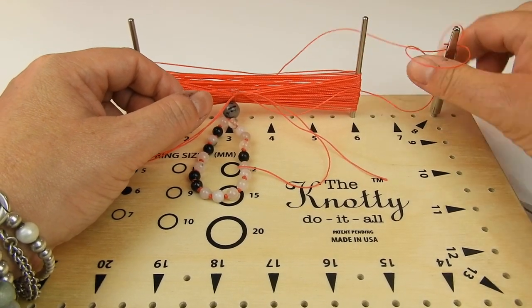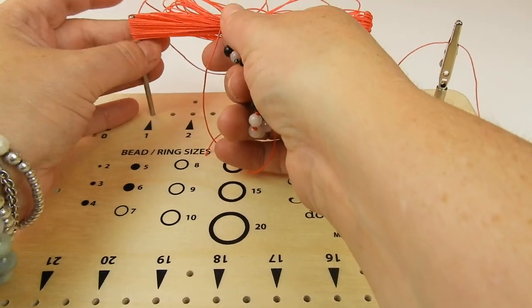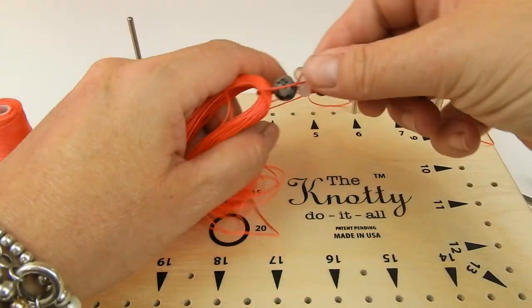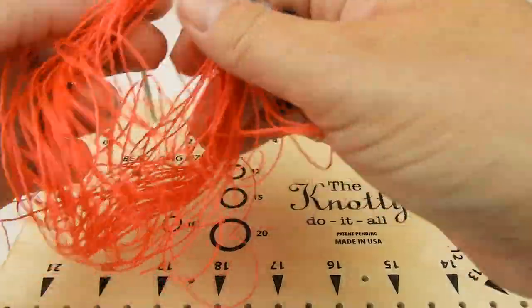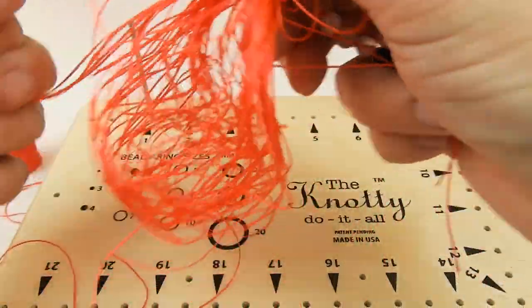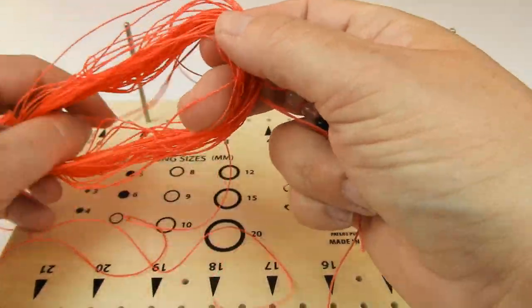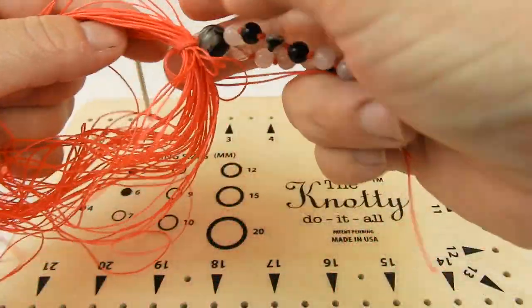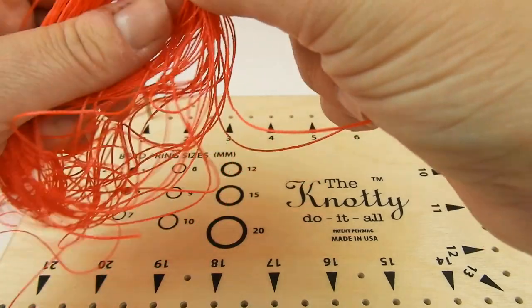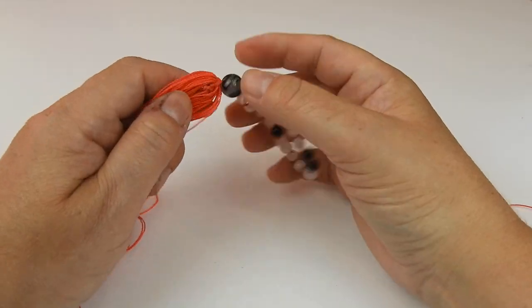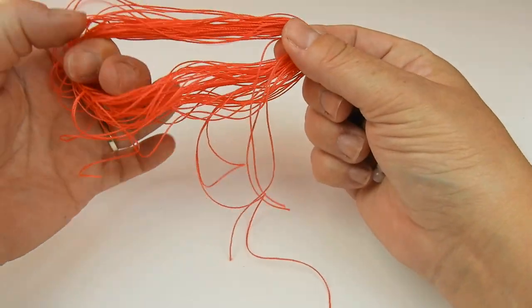That's now attached to here. We can undo our crocodile clip and take off the actual tassel itself. What we have now is our tassel attached to the inside of our loop. It looks a little bit messy at the minute.